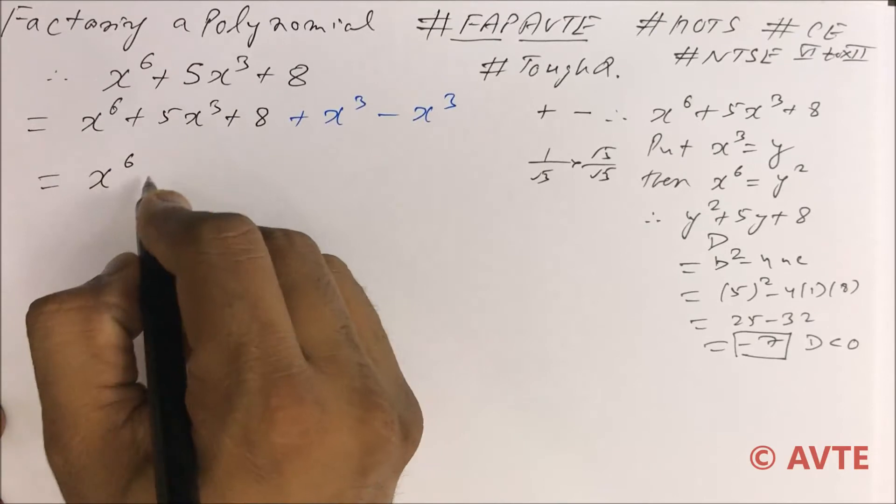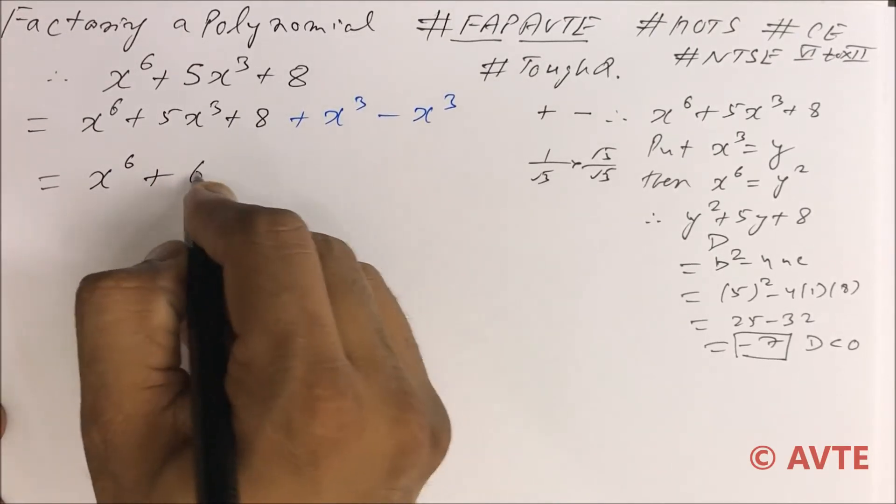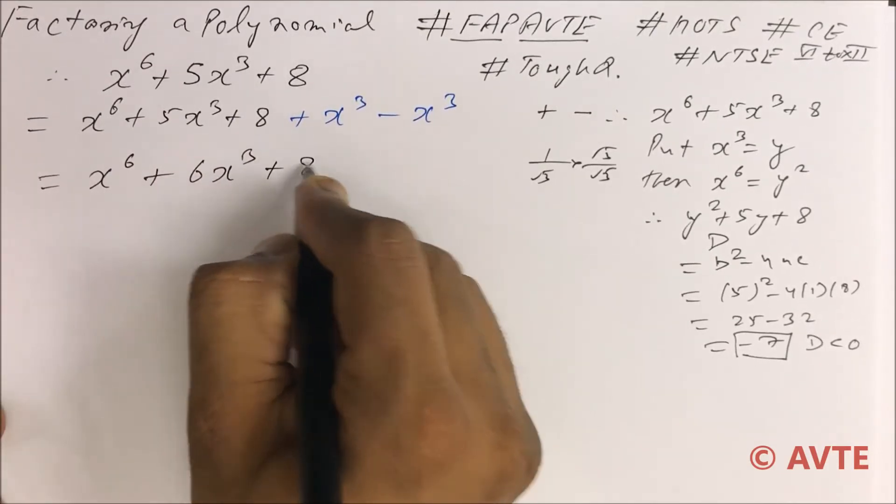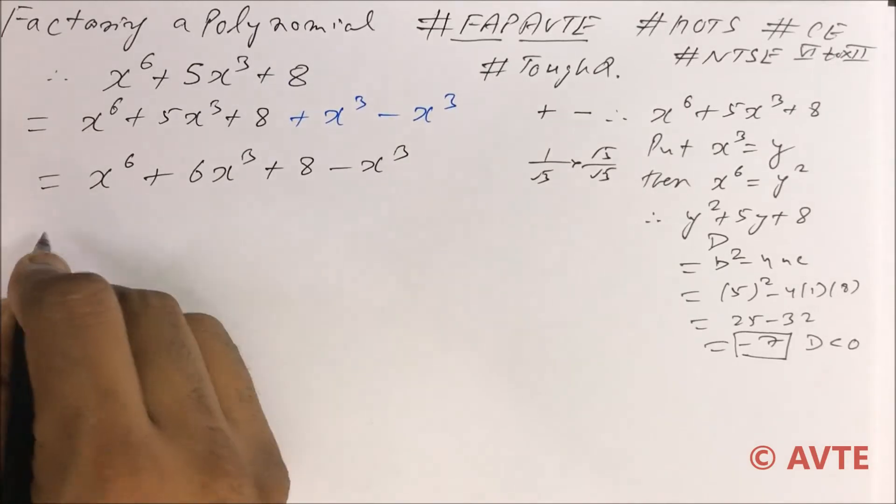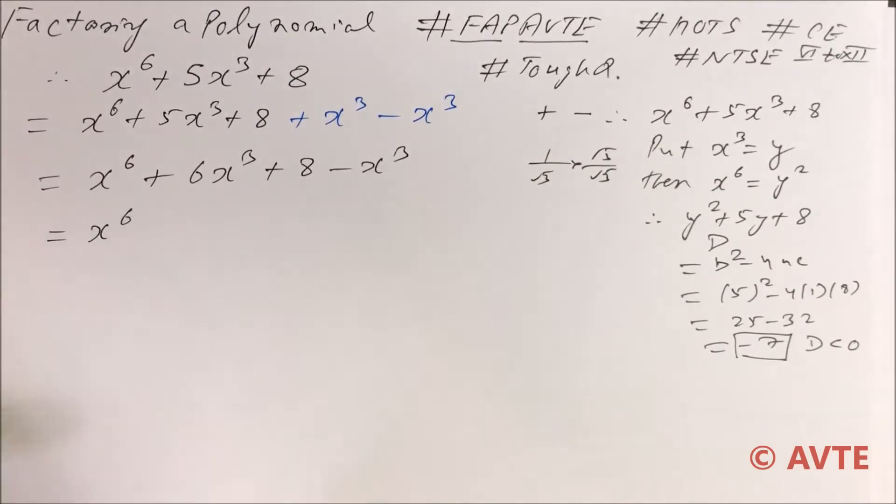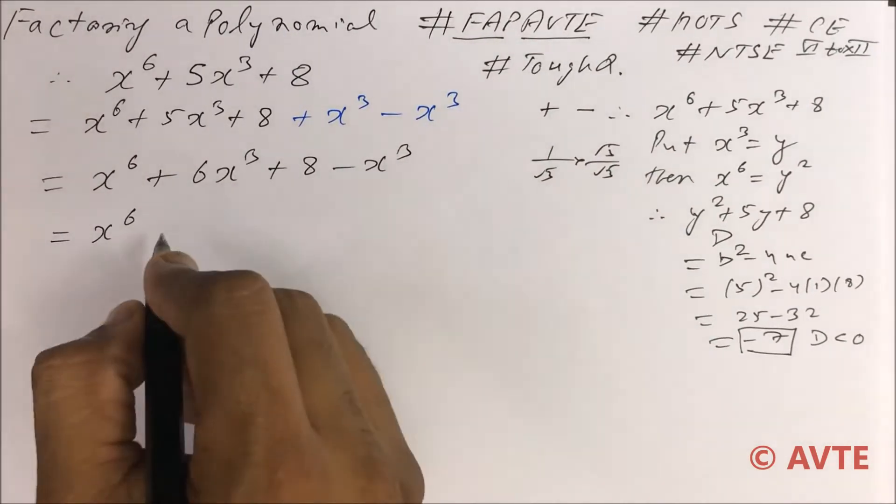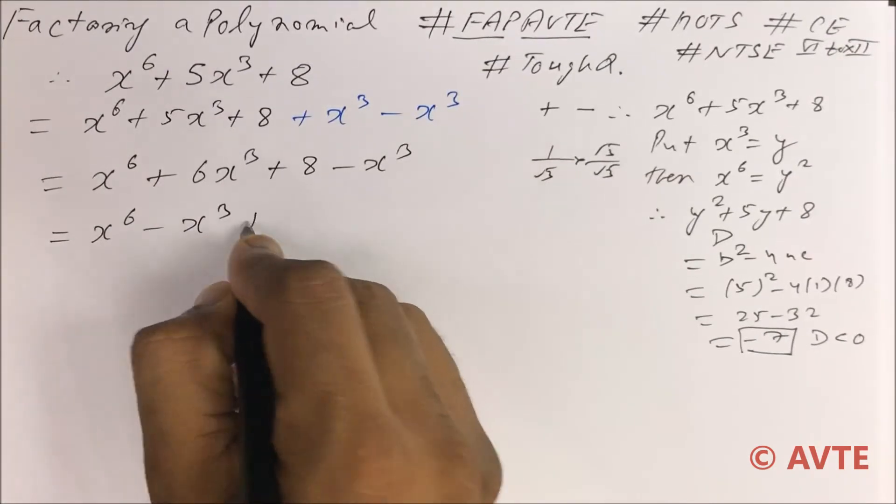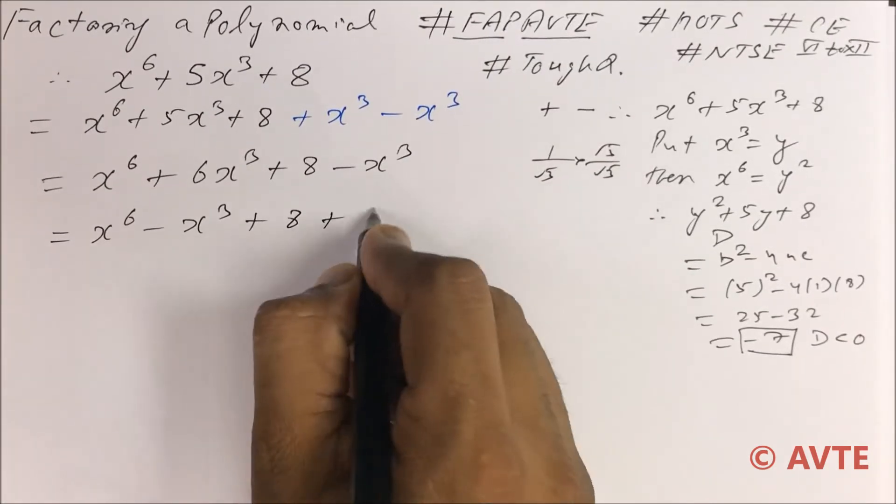It becomes x to the power 6 plus 6x cube plus 8 minus x cube. If we rearrange x to the power 6 minus x cube plus 8 plus 6x cube.